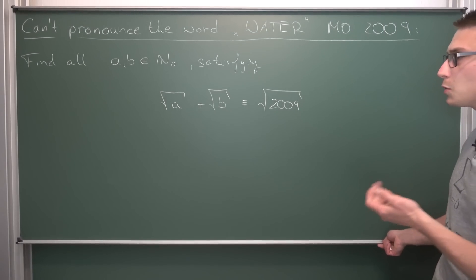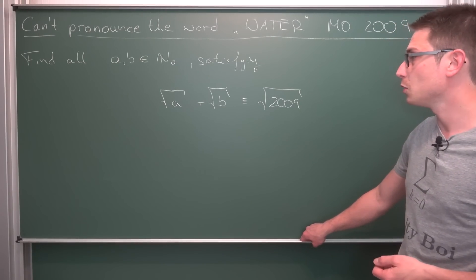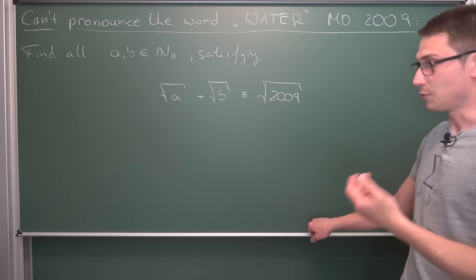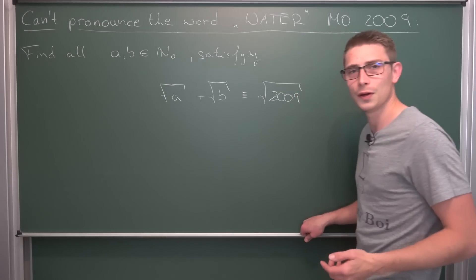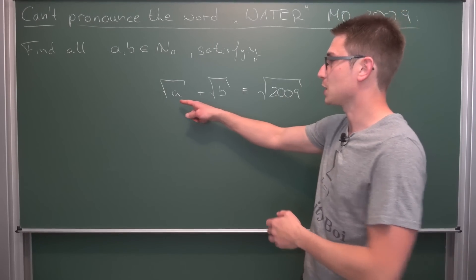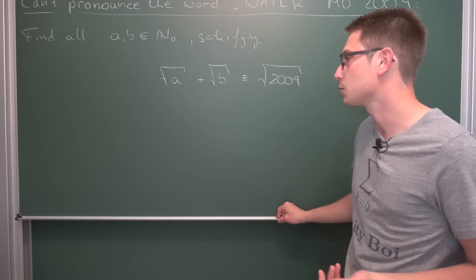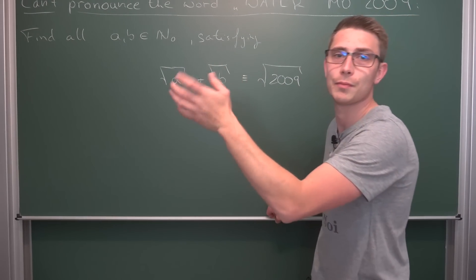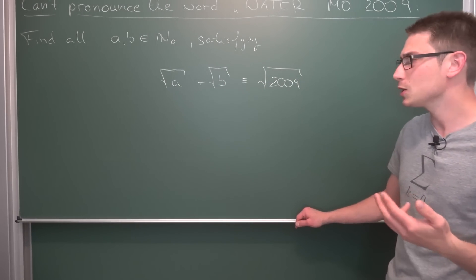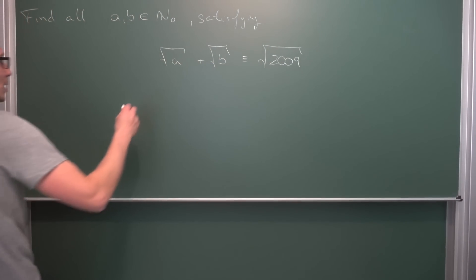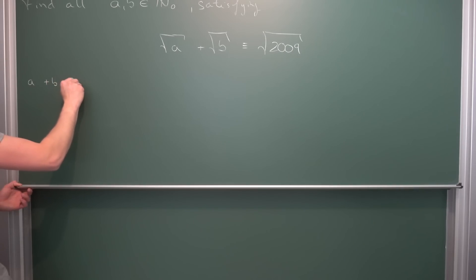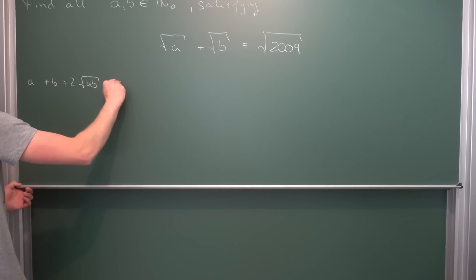So how would you proceed on a problem like this? Normally if I see square root of a plus square root of b, I try to solve for one of the variables. The square root is in the way, so the natural approach is either taking the conjugate multiplied on both sides — multiplying both sides by square root of a minus square root of b and taking the difference of two squares — or you can simply square both sides. If we square both sides, we get by the binomial theorem: a plus b plus two times the square root of ab is equal to 2009.